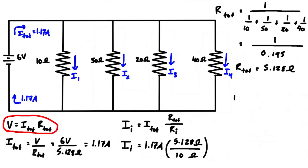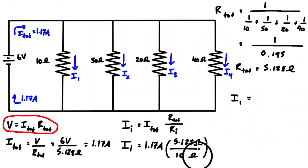So I1 equals 1.17 amps times 5.128 ohms divided by 10 ohms, giving us 0.6 amps, or 600 milliamps. We can solve for I2 as well, just by updating the expression to have 50 ohms on the bottom.